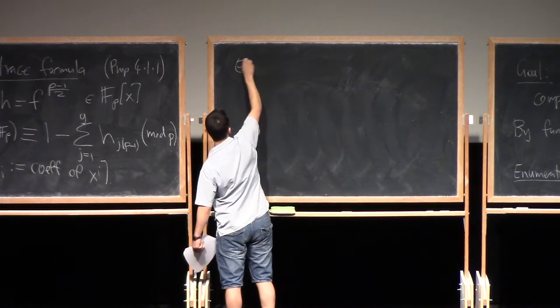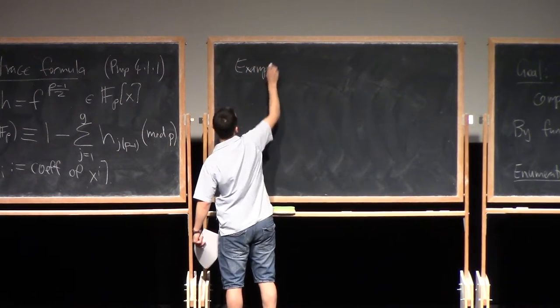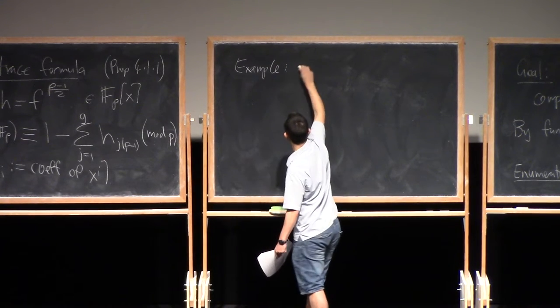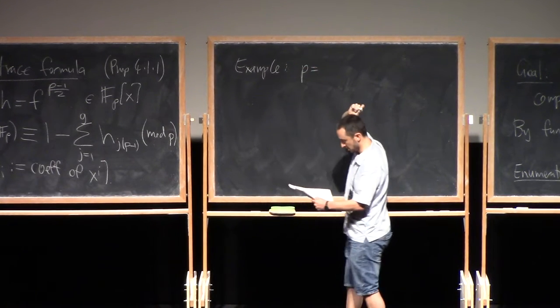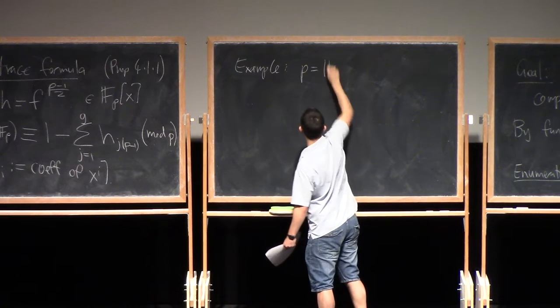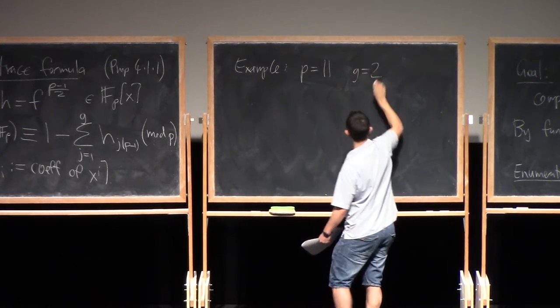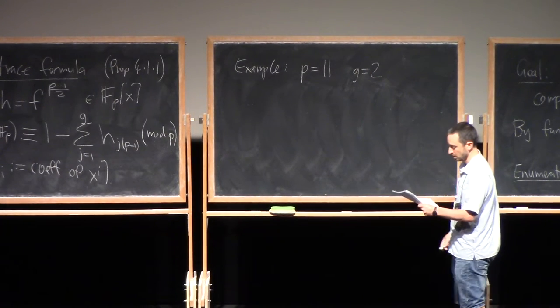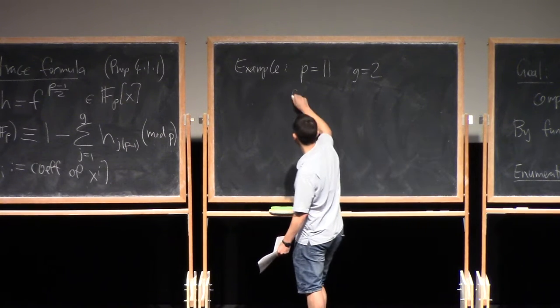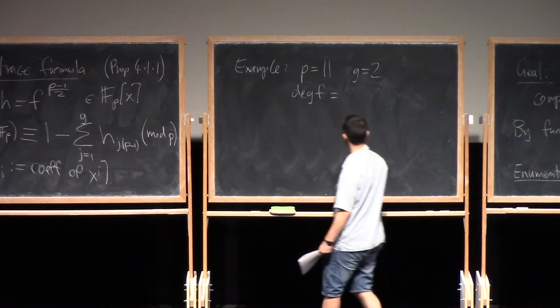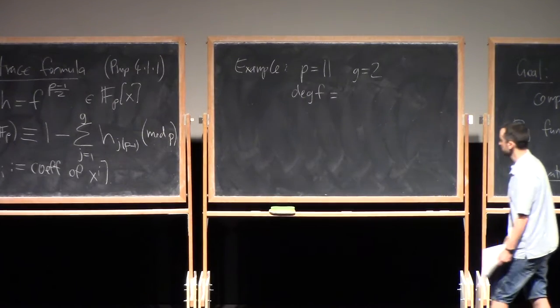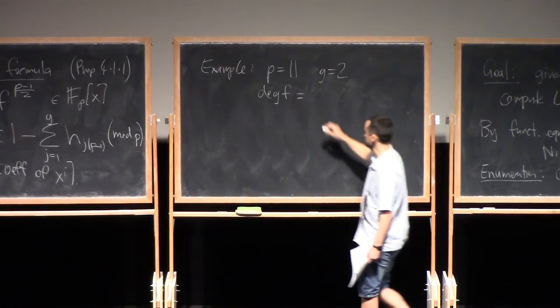So a quick example. Let's take P is 11 and G equals 2. So G is 2 curve over F_11. So the degree of F, well, it could be either 5 or 6. Let's just assume it's 6.